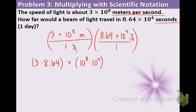3 times 8.64 is 25.92. And today's lesson tells us that when we have the same base, we're going to add the exponents. So that means we get 25.92 times 10 to the 12th.